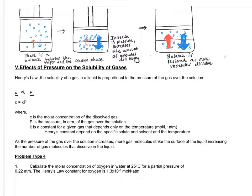We can replace that proportional symbol with a proportionality constant. We're going to go through what each of these variables mean. C represents the molar concentration of the gas that's dissolved, and molar concentration is moles over liters of solution.